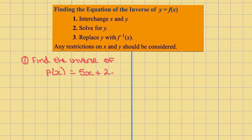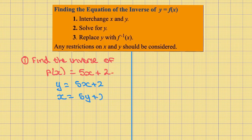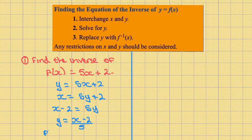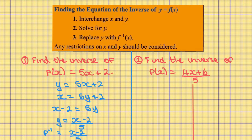Example one: find the inverse of f of x equals five x plus two. Rewrite as y equals five x plus two. Step one: interchange x and y, so we get x equals five y plus two. Step two: solve for y — x minus two equals five y, therefore y equals x minus two over five. Step three: replace y with f to the minus one, so f to the minus one of x equals x minus two over five.